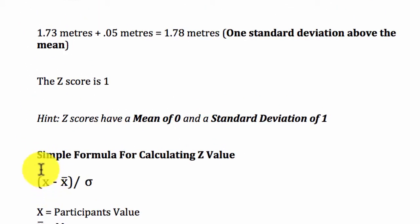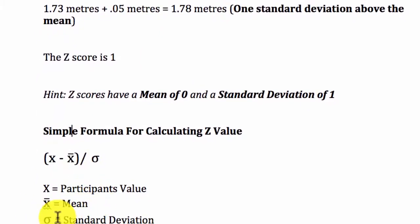X is the number. In this case, X for this student is 1.78. The X bar is 1.73, which is the mean, and the sigma sign, which is the standard deviation. If you plot these values we have up here into this formula, you will arrive at the Z score of 1.